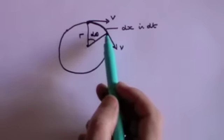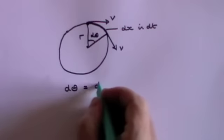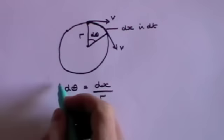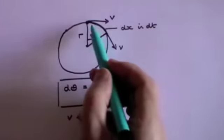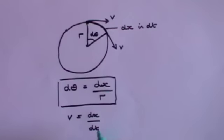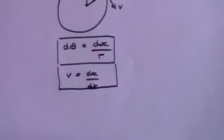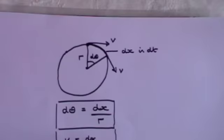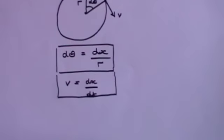There are several things we can say. First, the angle in radians dθ equals the arc length dx divided by the radius r — that's just the definition of radians. Second, the velocity equals the distance divided by the time: v equals dx divided by dt. Now we need to know how the velocity changes, because acceleration is the rate of change of velocity. If we can find the change in velocity dv and divide it by dt, that gives us the acceleration.